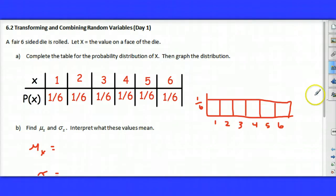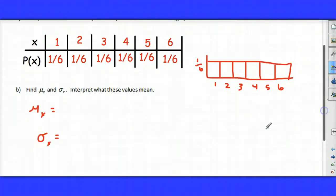So my mean is 3.5 and my standard deviation is 1.7. That means if I was to roll the die many times, I would expect to have a roll on average of 3.5, and the 1.7 describes my typical spread from that mean.